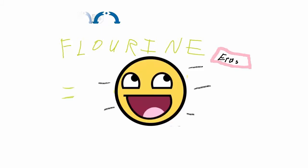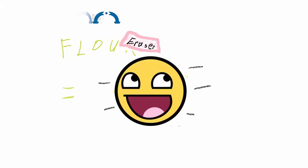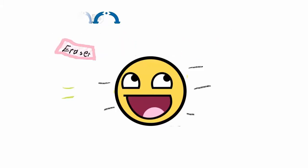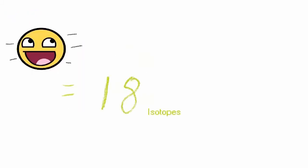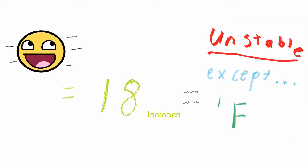Now, let's see how many isotopes it has. Let's just grab this eraser, color it in, erase all this, bring this over here. It has 18 isotopes, which are all unstable except for Fluorine-19.